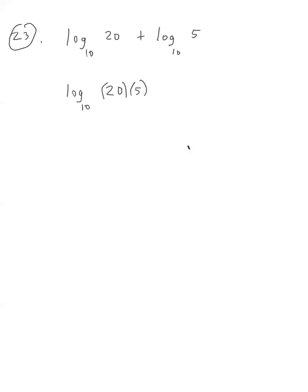20 times 5 is 100, so this works out to log base 10 of 100. To find what a logarithm equals, you think of what power would change the base into the value inside the log — what power changes 10 into 100. The answer is a power of 2, so the answer is 2.